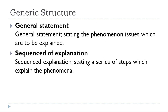The purpose of explanation text is to explain how or why something happens. The generic structure of explanation text consists of only two structures: the first one is general statement, and the second is sequence of explanation.